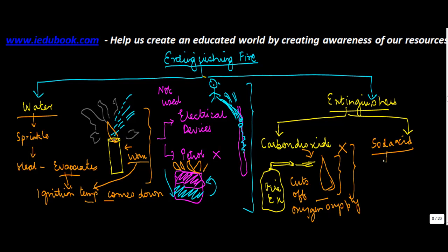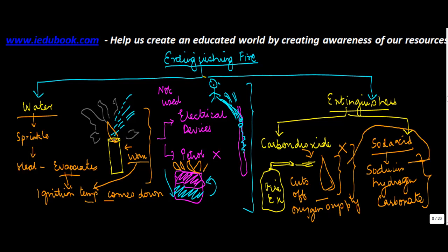The second type is a soda acid extinguisher. This basically contains a solution of sodium hydrogen carbonate. The moment this is put on a burning object, it creates carbon dioxide, which again kills the supply of oxygen and therefore extinguishes the fire.